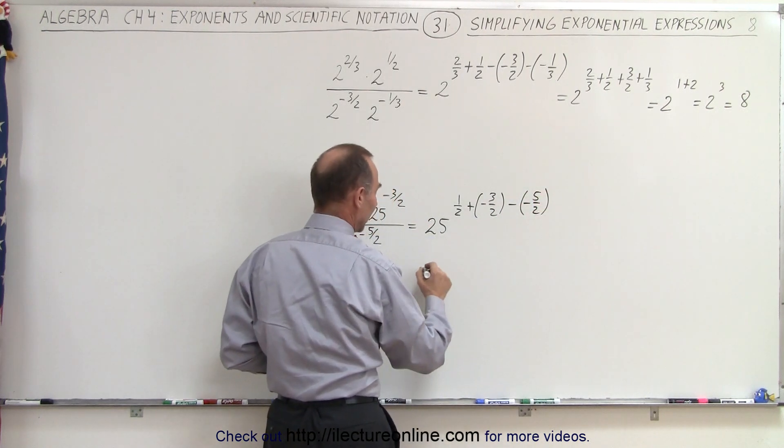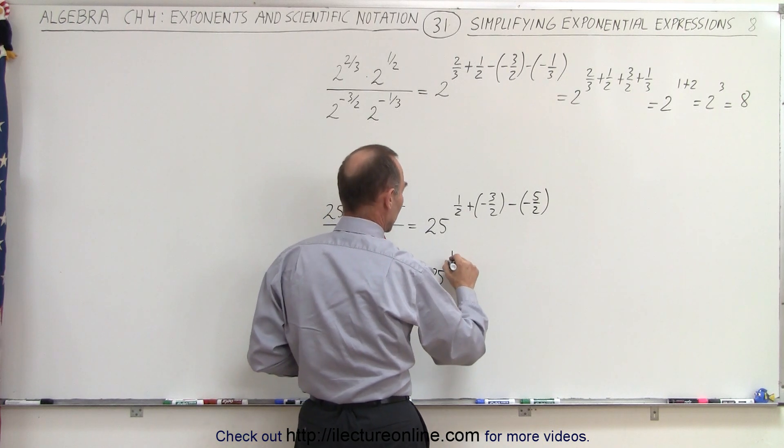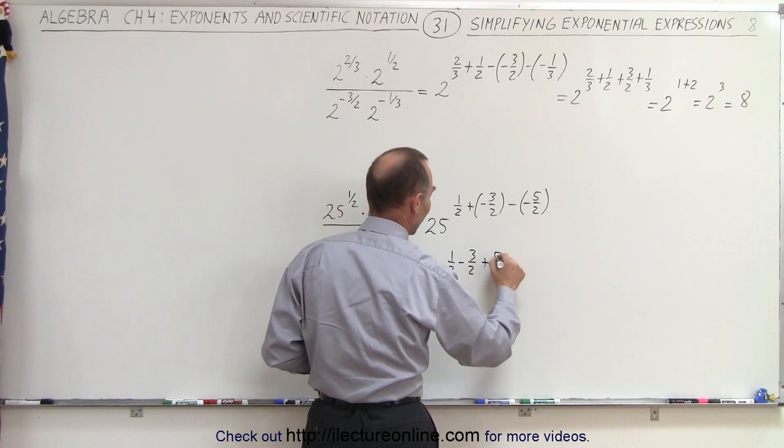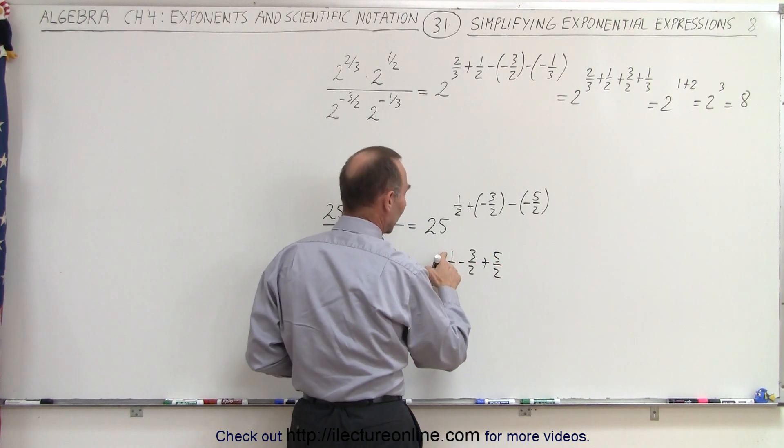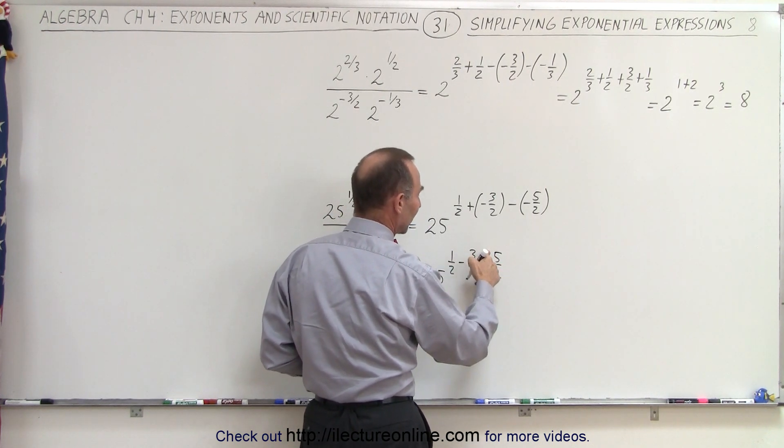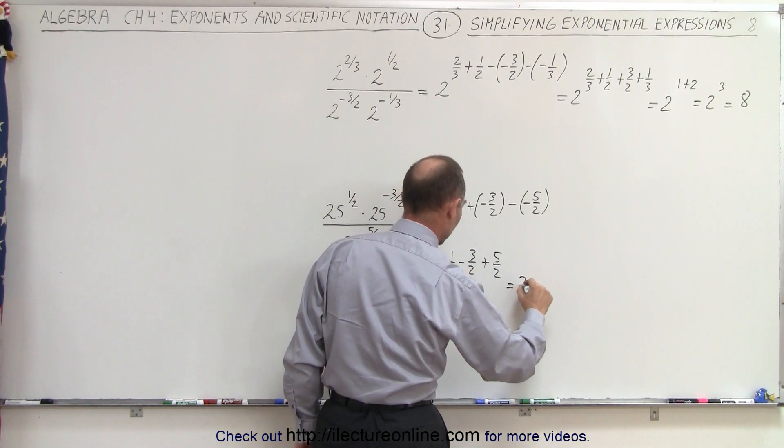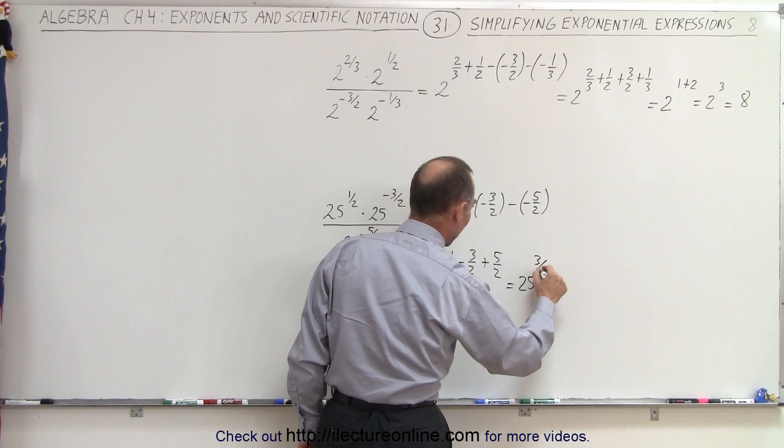So simplifying that, this is equal to 25, that would be 1 half minus 3 halves plus 5 halves. And 1 minus 3 is minus 2 plus 5 is, let's see here, that's 5, that's 2, that would be 3 halves. So this would be equal to 25 to the 3 halves power.